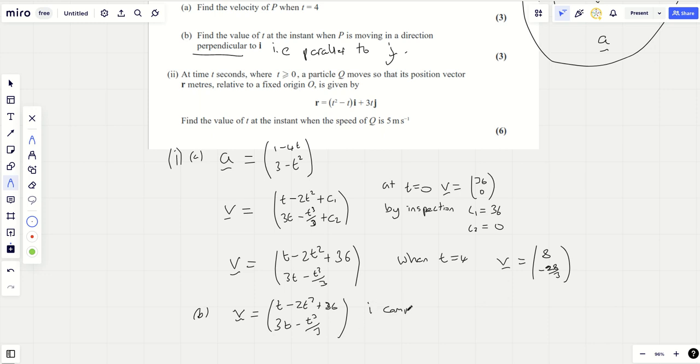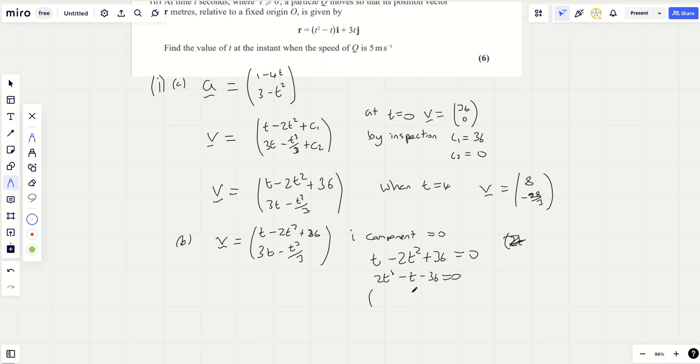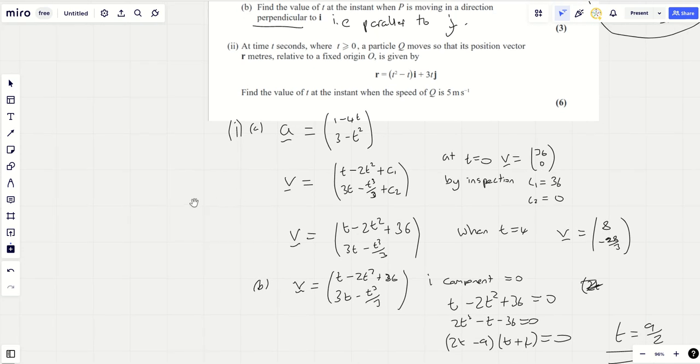So if it's parallel to J, then the I component equals zero. And so T minus 2T squared plus 36 equals zero. And so that's going to give you 2T squared minus T minus 36 equals zero. I'll probably use a calculator, but you don't have to. T plus 4, that gives you minus 9T plus 8T, so that's minus T. So you're going to get T is 9 over 2 here, and that's the time when it's going perpendicular to the vector I. Watch out for that.